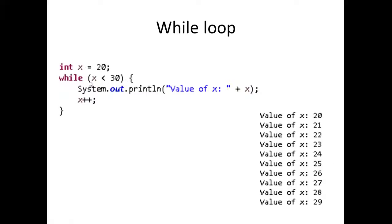So let's step through the first iteration of this loop. We have while x is less than 30 — x is currently 20, so if 20 is less than 30, this boolean value will be true. Because 20 is less than 30, we're going to go System.out.println value of x, which will equal 20. And then after that we're going to increment x by 1. So for the first iteration we're going to get value of x equals 20.